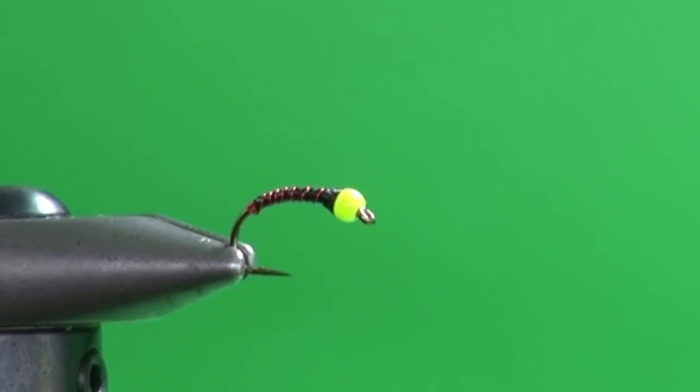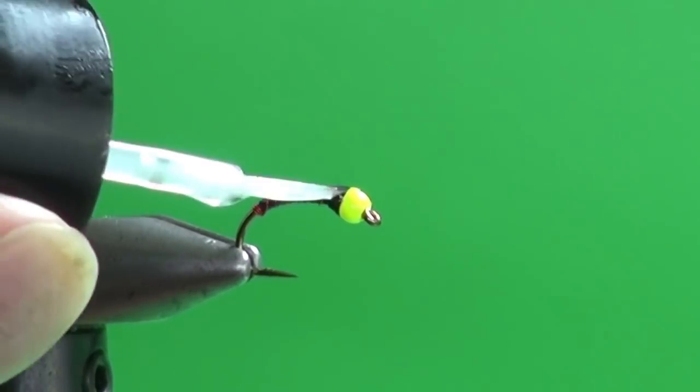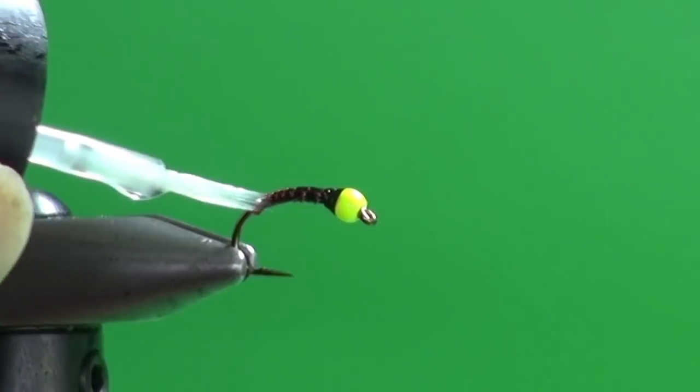So all we need to do now is a final body coating. And again, you could use a super glue. I'm going to use some of the Solaris Bone Dry. And we're just going to give this fly good coating. Like so. Fill in all those gaps.